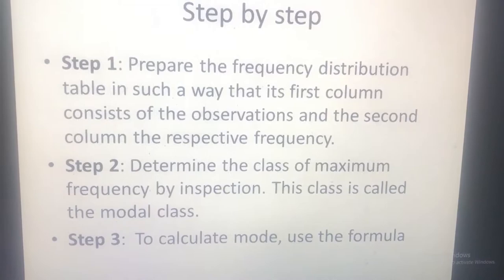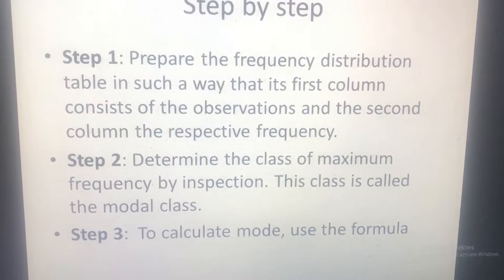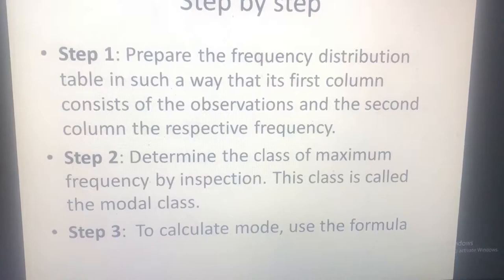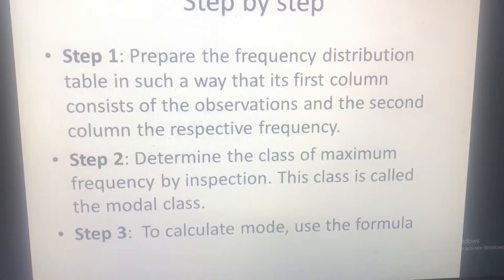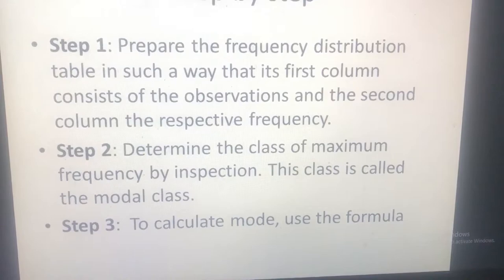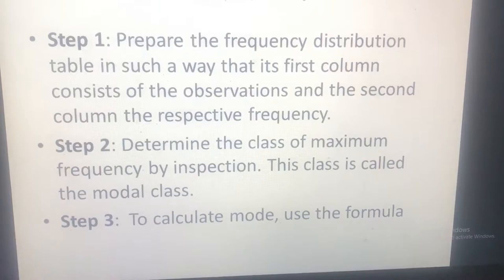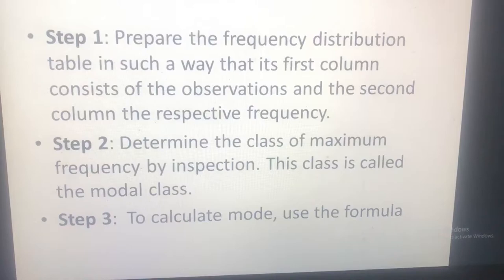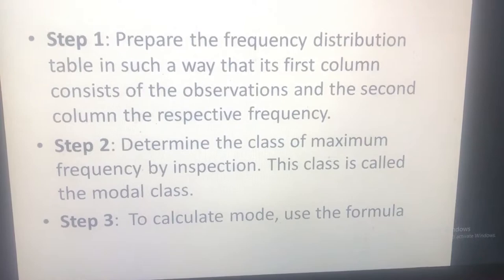We go step by step. Step one: prepare the frequency distribution table so that the first column consists of the observations and the second column the respective frequency. Step two: determine the class of maximum frequency by inspection — this class is called the modal class. Step three: calculate the mode using the formula.